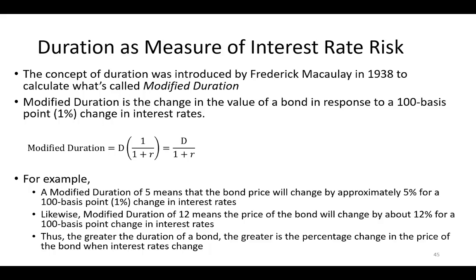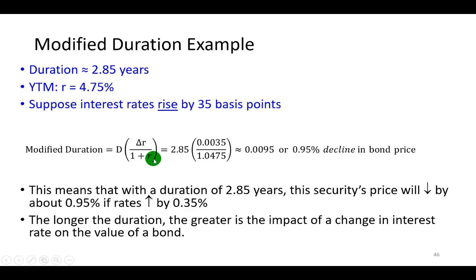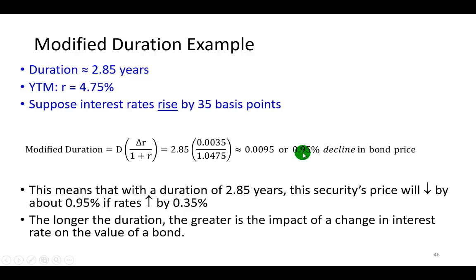In bond portfolio management, we can apply the concept of duration to measure the impact of interest rate risk by calculating the approximate percentage change in the price of the bond in response to changes in interest rates. We do this by utilizing what's called modified duration — an extension of Macaulay duration. As an example, given the duration we just calculated of 2.85 years and a yield to maturity of 4.75%, suppose interest rates were to rise by 35 basis points, which is 0.35%. Applying modified duration, we find that the bond price will approximately decrease by about 0.95%.